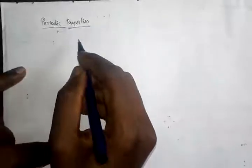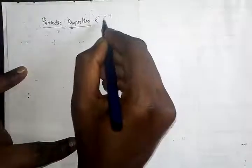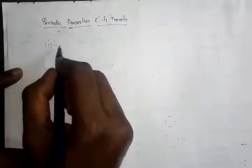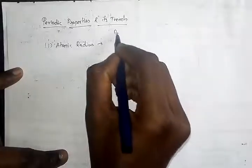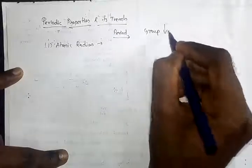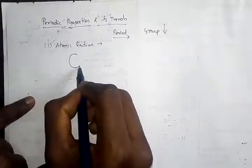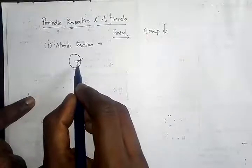These are periodic properties and their trends in the periodic table. Now, atomic radius — in the period, what will happen from left to right, and in the group, from top to bottom. Atomic radius means if you look at an isolated atom, it is the distance between the nucleus and the outermost electron. This is called atomic radius.